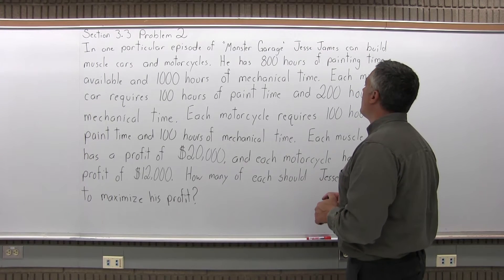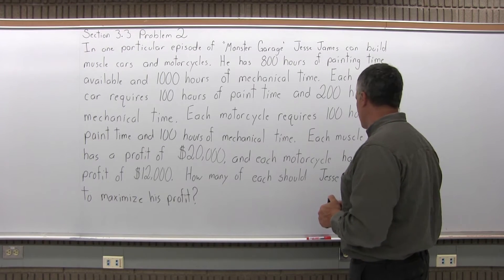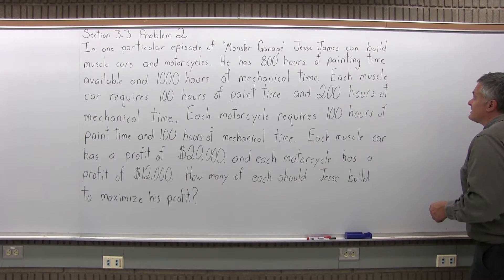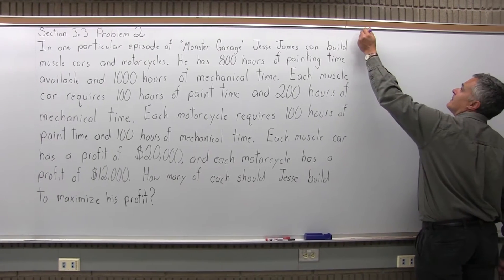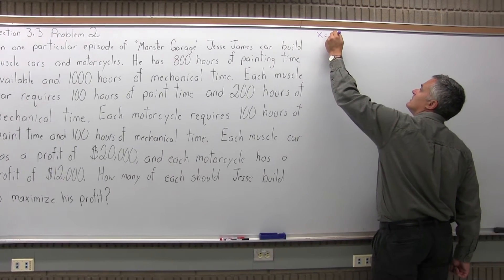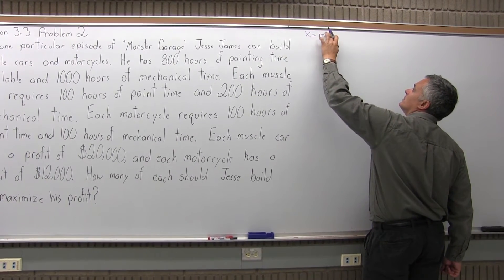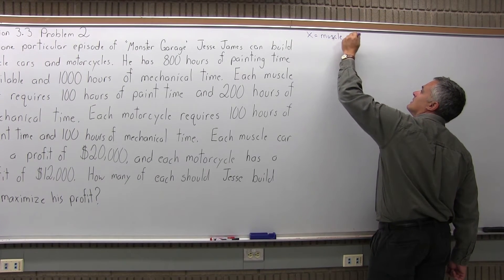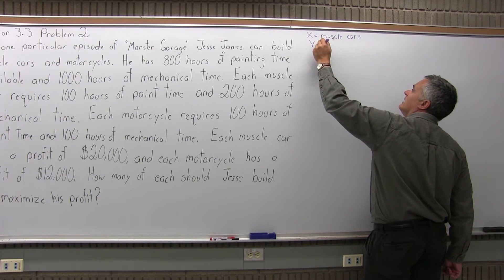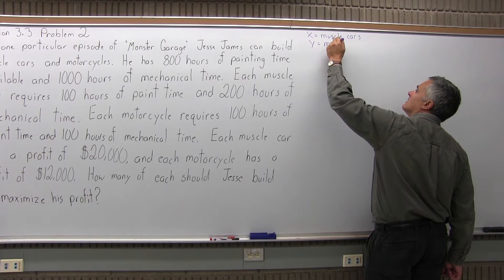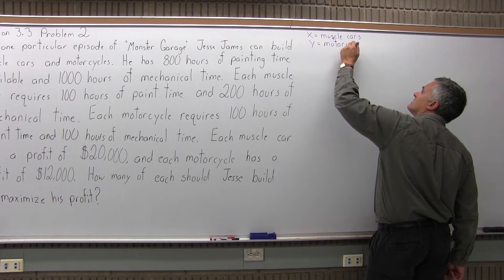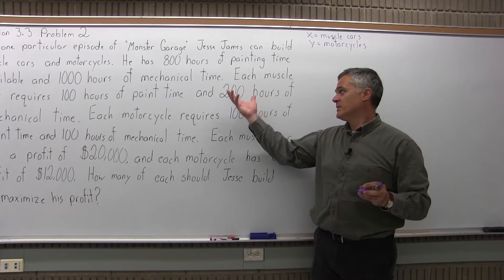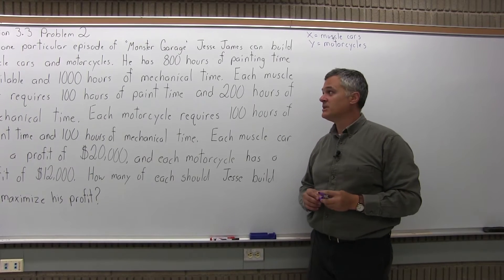the two things that are being made are muscle cars and motorcycles. The muscle cars are mentioned first, so I'll make them X. So up here let's put X equals muscle cars. Y equals motorcycles. Step one: identify your variables. We've done that. We've made each variable one of the two things that are being made.